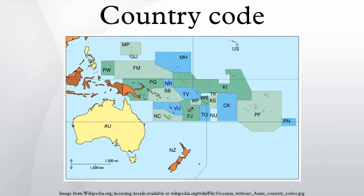Country codes are short alphabetic or numeric geographical codes developed to represent countries and dependent areas, for use in data processing and communications. Several different systems have been developed to do this. The best known of these is ISO 3166-1. The term country code frequently refers to international dialing codes, the E.164 country calling codes.